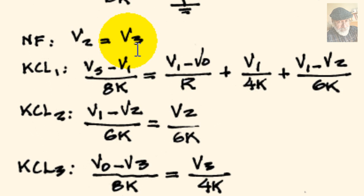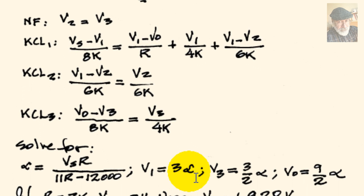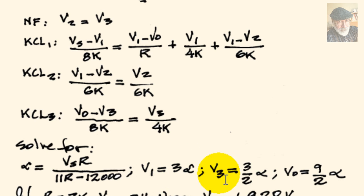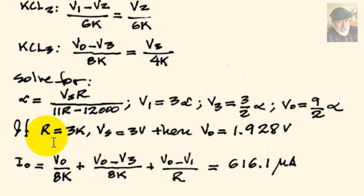Solving those four equations gives us V0, V1, and V3 — and of course V2, though we will not need it. All results are expressed in terms of alpha, where alpha equals Vs times R divided by (11R minus 12,000). V1 is 3 alpha, V3 is (3/2) alpha, and V0 is (9/2) alpha. Substituting R = 3 kilohms and Vs = 3 volts, the output voltage is 1.928 volts.